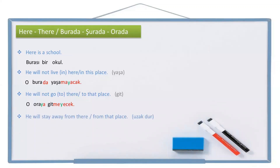And the last example. He will stay away from there — he will stay away from that place. He: o. From there: oradan, the ablative case. Stay away: uzak dur. Will stay away: uzak duracak. So: o oradan uzak duracak. Alright friends, if you have any questions, please write them in the comment section. Don't forget to subscribe. Hope to see you in our following lessons. Goodbye, hoşçakalın.